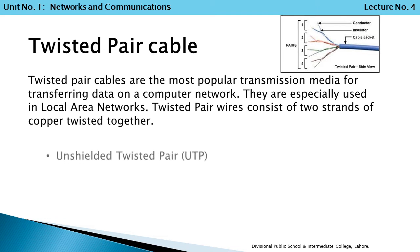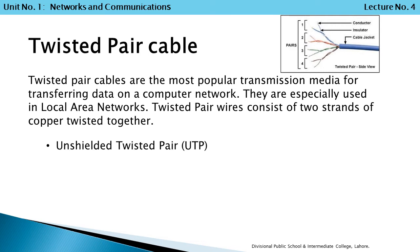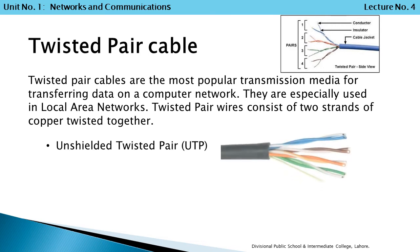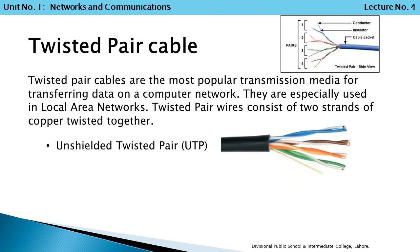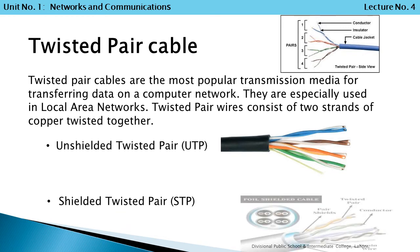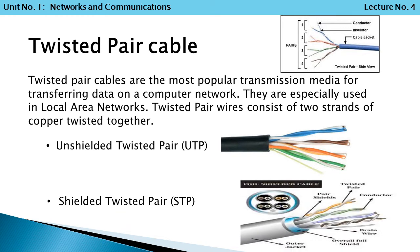Twisted Pair Cable is of two types. Number 1: Unshielded Twisted Pair Cable — cables that are unshielded, meaning there is no shield on them. Number 2: Shielded Twisted Pair Cable — cables in which the wires are shielded.